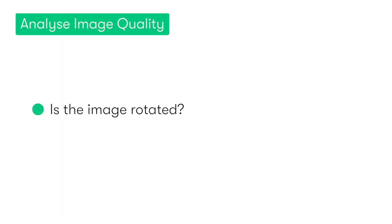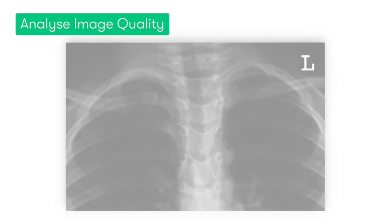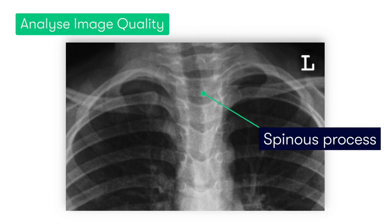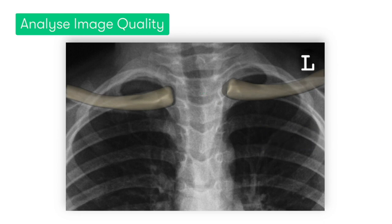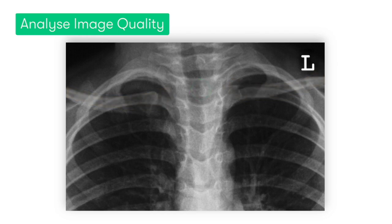We next want to check to see if the X-ray is rotated. To do this, we identify the spinous processes of the vertebrae and also the two heads of the clavicles. In a non-rotated chest X-ray, the spinous processes should sit neatly between the two clavicular heads. And here we can see that this is the case in our image, so we can say that our image isn't rotated.